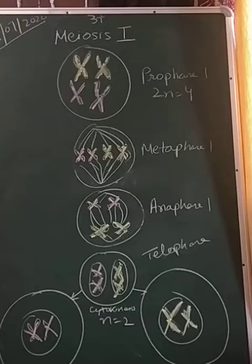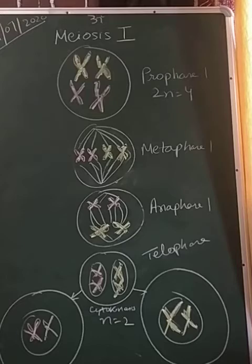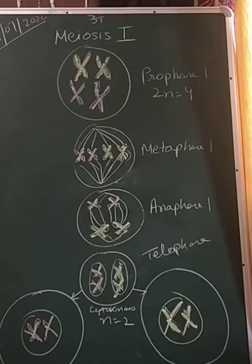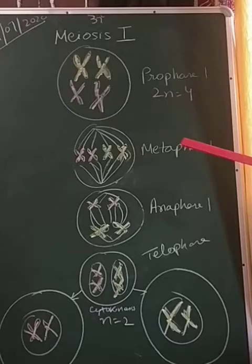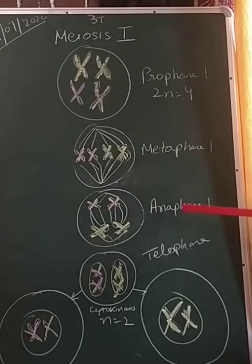I have also told you a mnemonic to remember these: 'Le Zara Pani De De' — Le means leptotene, Zara means zygotene, Pani means pachytene, De means diplotene, and De De means diakinesis. Today we will study metaphase, anaphase, telophase one, and cytokinesis.